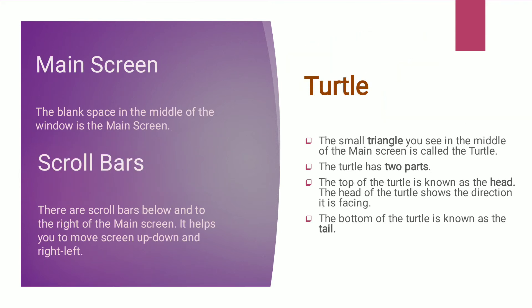The third component is the main screen. The blank space in the middle of the window is known as the main screen. Next are the scroll bars. There are scroll bars below and to the right of the main screen which help you move your screen up and down and right and left. To move up and down, use the vertical scroll bar; to move right and left, use the horizontal scroll bar.